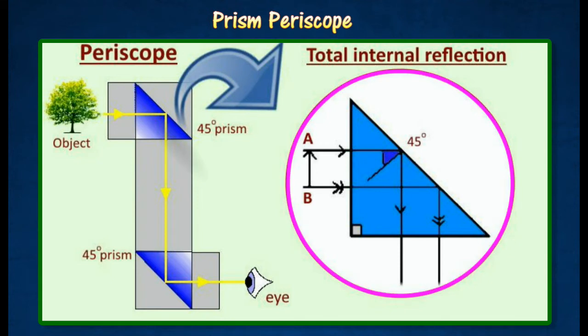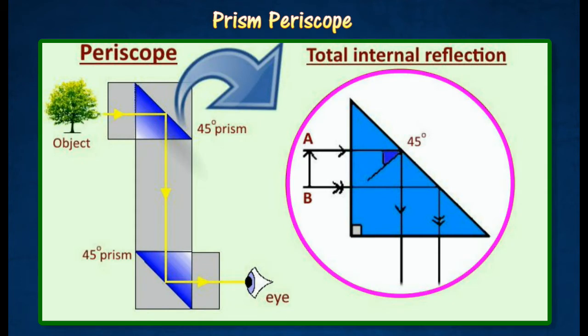Total internal reflection takes place at the hypotenuse face of both prisms. The angle of incidence at these faces is 45 degrees, which is greater than the critical angle of crown glass prism, which is 42 degrees.